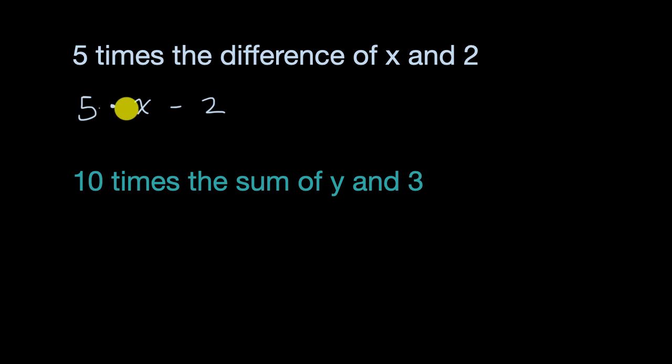But this expression has a problem, because whoever's interpreting it, if they're following order of operations, which they should, that would mean that they would multiply the five and the x first and then subtract two. But that's not what's going on in the sentence.